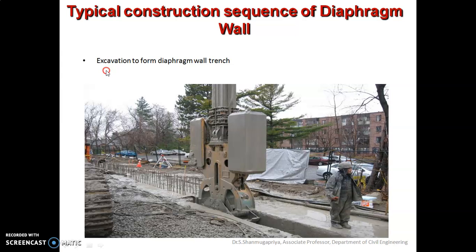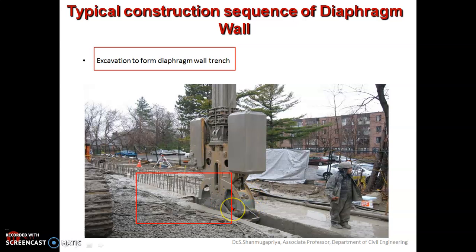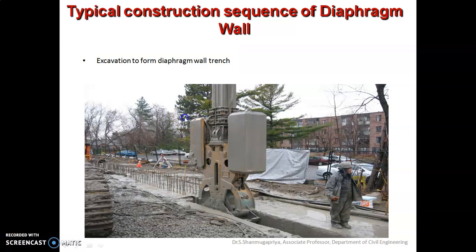In the second step you have to do the excavation to form the diaphragm wall trenches. Excavation is done using equipment called the clamshell. If the clamshell is not available, other equipment fitted with a hammer on a crane can be used. In cases where you come across boulders during excavation, gravity hammers should be used. This second step involves excavating to form the diaphragm wall trenches using equipment like the clamshell.